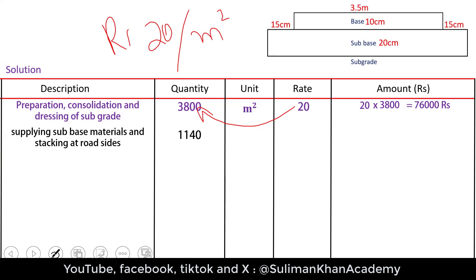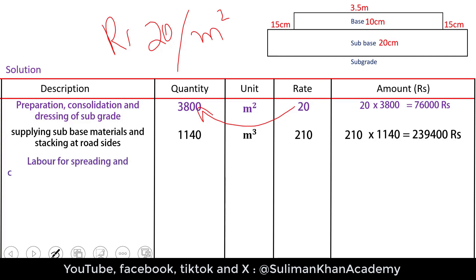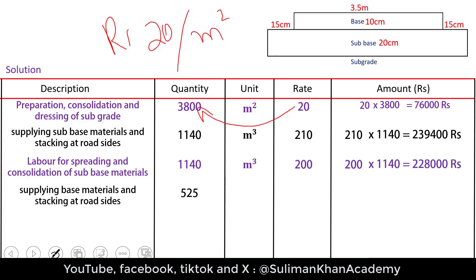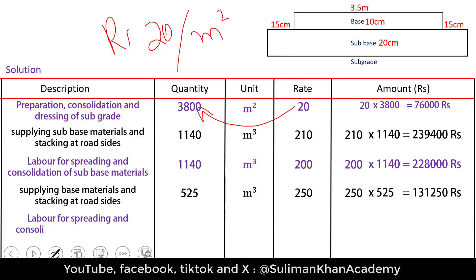For subgrade dressing, the quantity is 3800 square meters at an assumed rate of 20 rupees per square meter, giving the total amount by simple multiplication. For subbase material supply, the unit is cubic meters at 210 rupees per cubic meter — multiply quantity by rate for total. For labor spreading and consolidation, same quantity in cubic meters at a slightly different rate gives the total amount, and so on for each item.